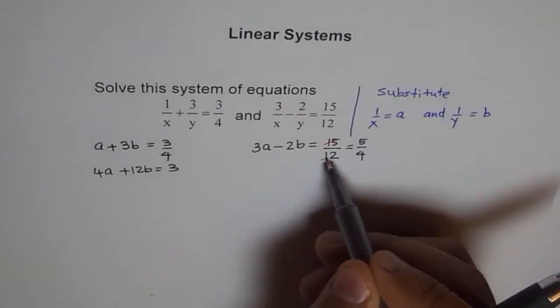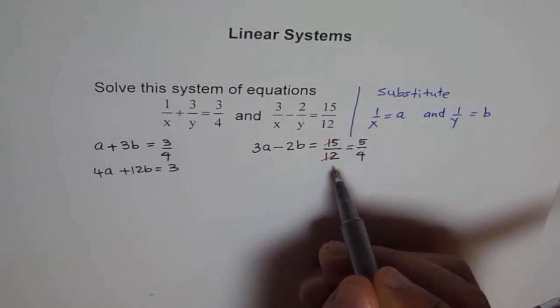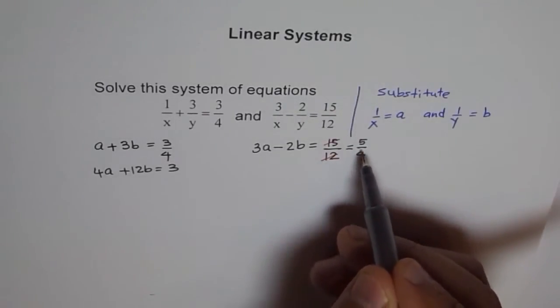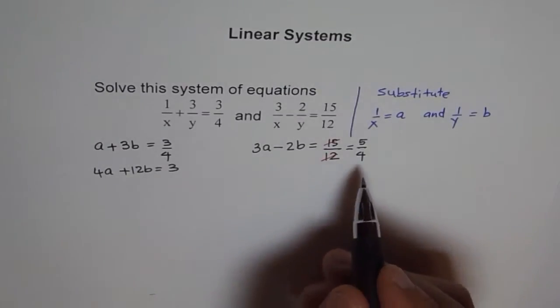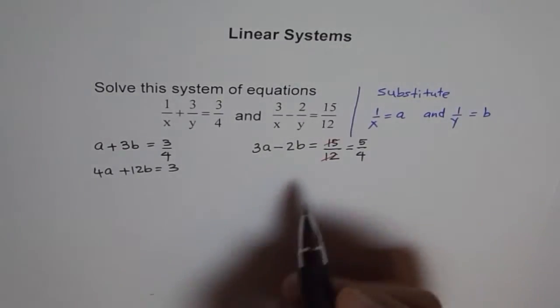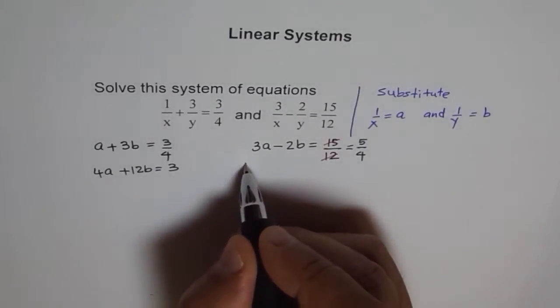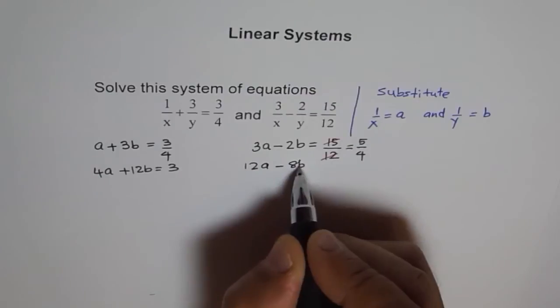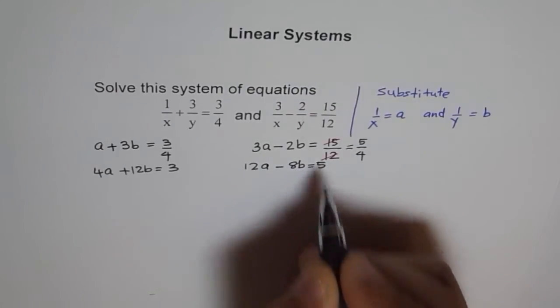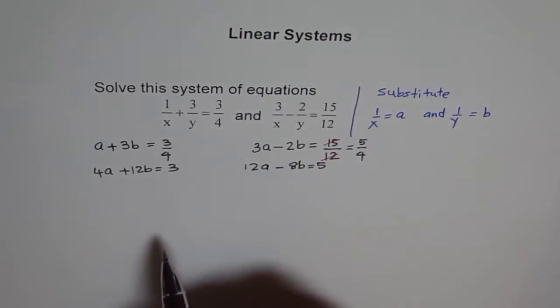So 15 and 12, they have 3 common, right? So we get 5 over 4 here. Wherever you can, why not? After simplifying, now let me multiply it by 4. So I get here 12A minus 8B equals 5. So these are our two equations.